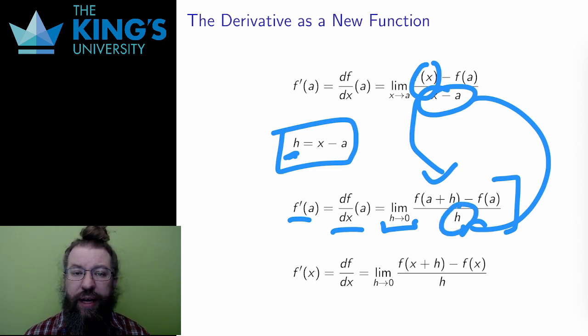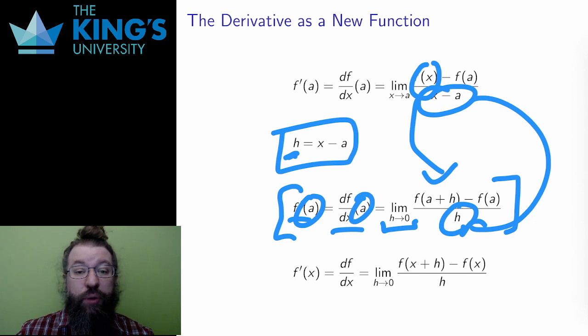It also allows another very important observation. This derivative, f prime of a, or df/dx of a, is the slope of the tangent line at some point x equals a. It's a calculation at a specific point a.